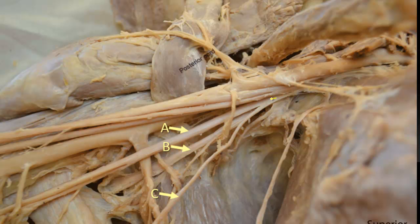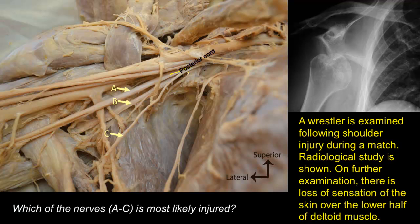This is the posterior cord. The posterior cord has five branches: the upper subscapular and the lower subscapular, and in between them is the thoracodorsal nerve. We can follow it and find that it goes to the tendon of the latissimus dorsi muscle. The other two branches of the posterior cord are terminal branches — large branches — these are the axillary nerve B and the radial nerve A.